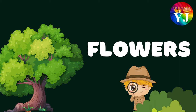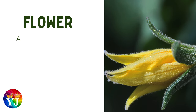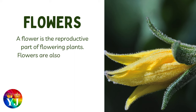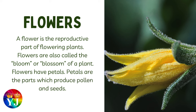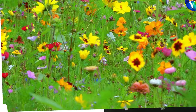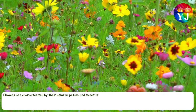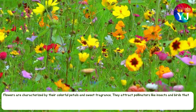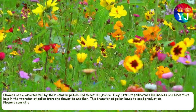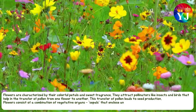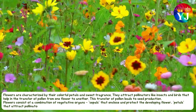Flowers. A flower is the reproductive part of flowering plants. Flowers are also called the bloom or blossom of a plant. Flowers have petals, which are the parts that produce pollen and seeds. Flowers are characterized by their colorful petals and sweet fragrance.